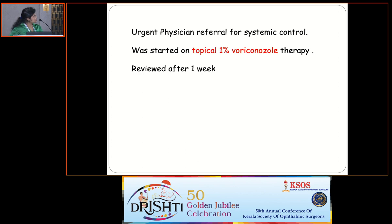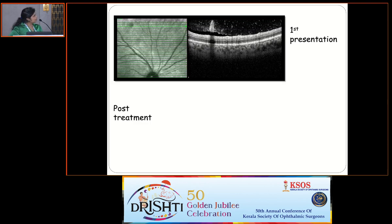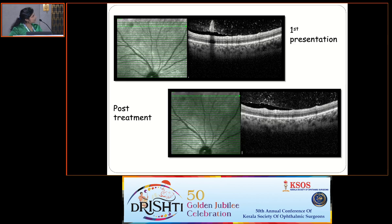Physician referral was sent for systemic control and the patient was started on topical 1% voriconazole therapy. After one week review, vision was the same but lesions appeared to be resolving. On repeat OCT, the hyper-reflectivity of the inner retina was significantly decreased with reduced vitreous aggregates. The first presentation showed the typical hyper-reflective lesion on the inner retina with vitreous aggregates extending into the vitreous cavity — termed the 'rain cloud sign'.